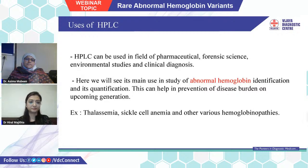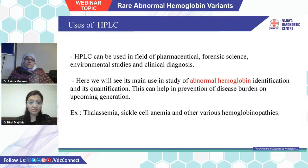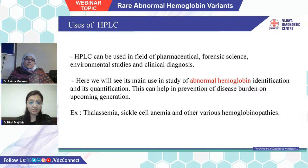Uses of HPLC include pharmaceuticals, forensic science, environmental studies, and clinical diagnosis to separate various substances. Here we are concerned with abnormal hemoglobin, which is identified and quantified by this method. It will help us prevent the disease burden in upcoming generations. Thalassemia, sickle cell anemia, and all hemoglobinopathies can be screened by this method.